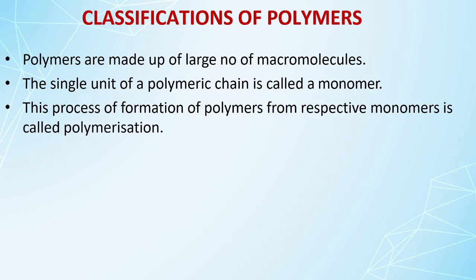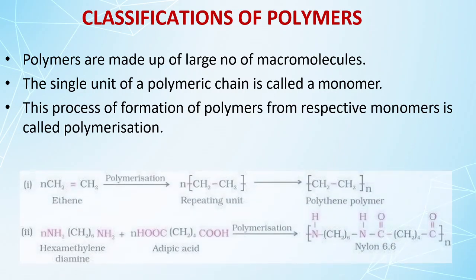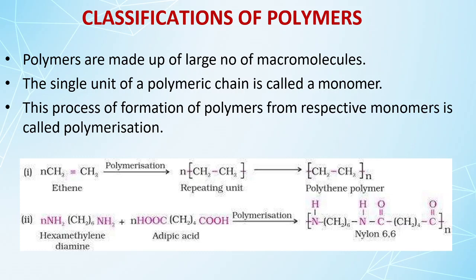When these different macromolecules combine, they are known as polymers. A single unit of a polymeric chain is known as a monomer, and the process of formation of polymers from monomers is called polymerization. For example, n number of ethene molecules combine to form polyethene, and hexamethyldiamine combines with adipic acid to form Nylon 6-6.